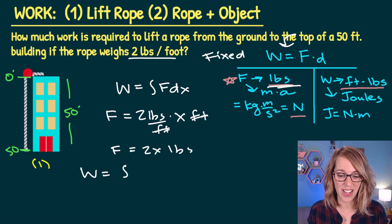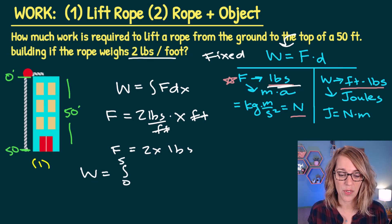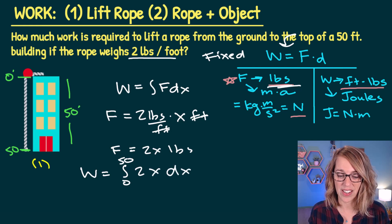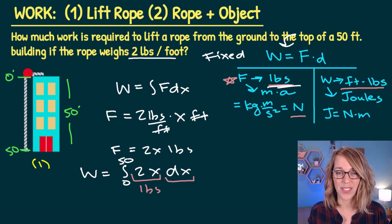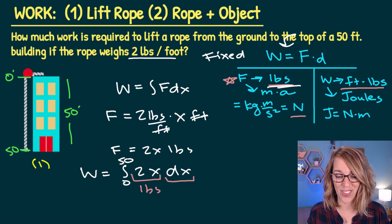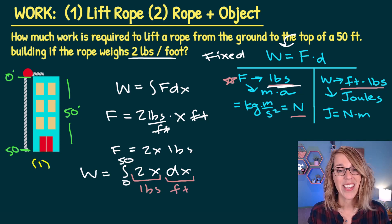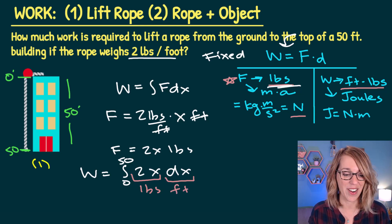So work becomes the integral from 0 to 50, 2x dx. Just a quick check on units. 2x, we've got that one in pounds, and dx is going to be the change in x. So that's going to be in feet, and we're going to get foot-pounds when we are done.